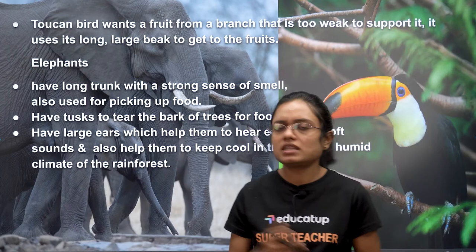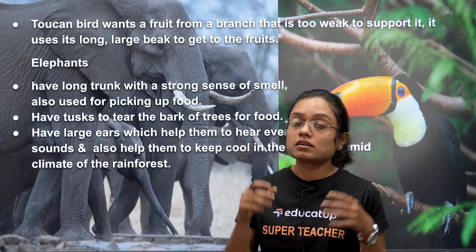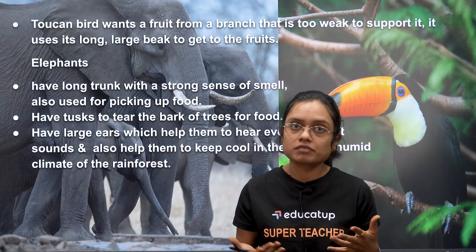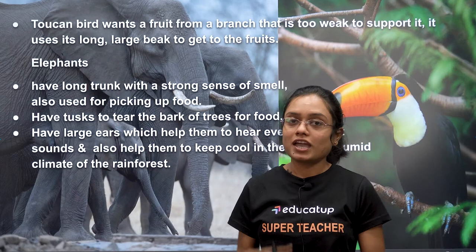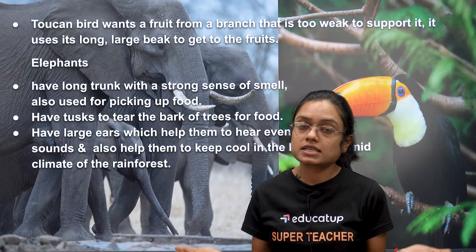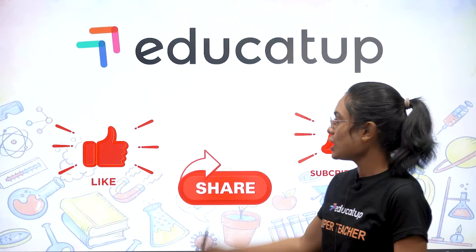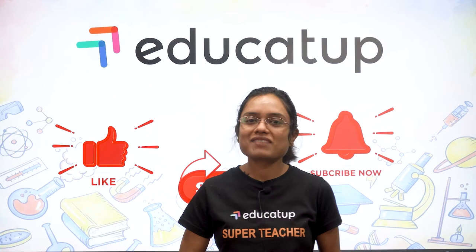Elephants have a long trunk and a very strong sense of smell, which helps them find food. Their two large tusks help in breaking the bark of trees to get food. Their large ears give them the ability to hear even very soft sounds, and by flapping their ears they can cool themselves down — an important adaptation given the warm climate of tropical rainforests.